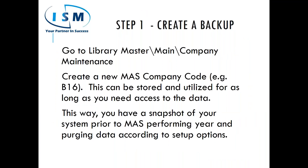First things first: Library Master. Start by creating a backup. Go into your Library Master module and create a backup of however many company codes you need. If you're running one company code, you can prefix it with a 'B' and label it by year. Create a backup so you have a snapshot of your system before purging data. If you have to process payroll in the new year before running W-2s, you'll run off that backup company.